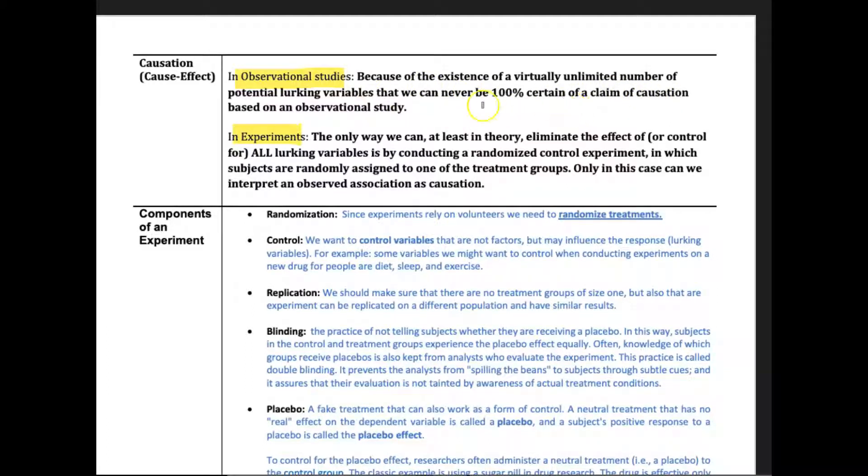We just see a correlation, and that's due to an unlimited number of what we call lurking variables. These other variables may have an influence on the response. If you're thinking about explanatory and response relationships, just because we see some type of relationship or pattern within those two variables doesn't mean there aren't other variables or lurking variables that could be the real reason why something's happening.